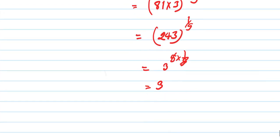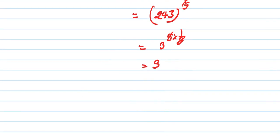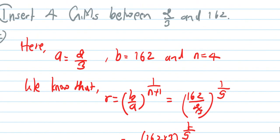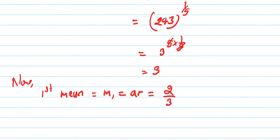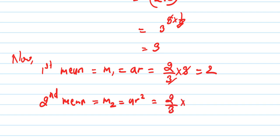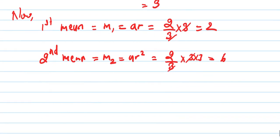So r = 3. Now for the first mean: m1 = a·r = 2/3 × 3 = 2. For the second mean: m2 = a·r² = 2/3 × 9; the 3s cancel, giving m2 = 6.